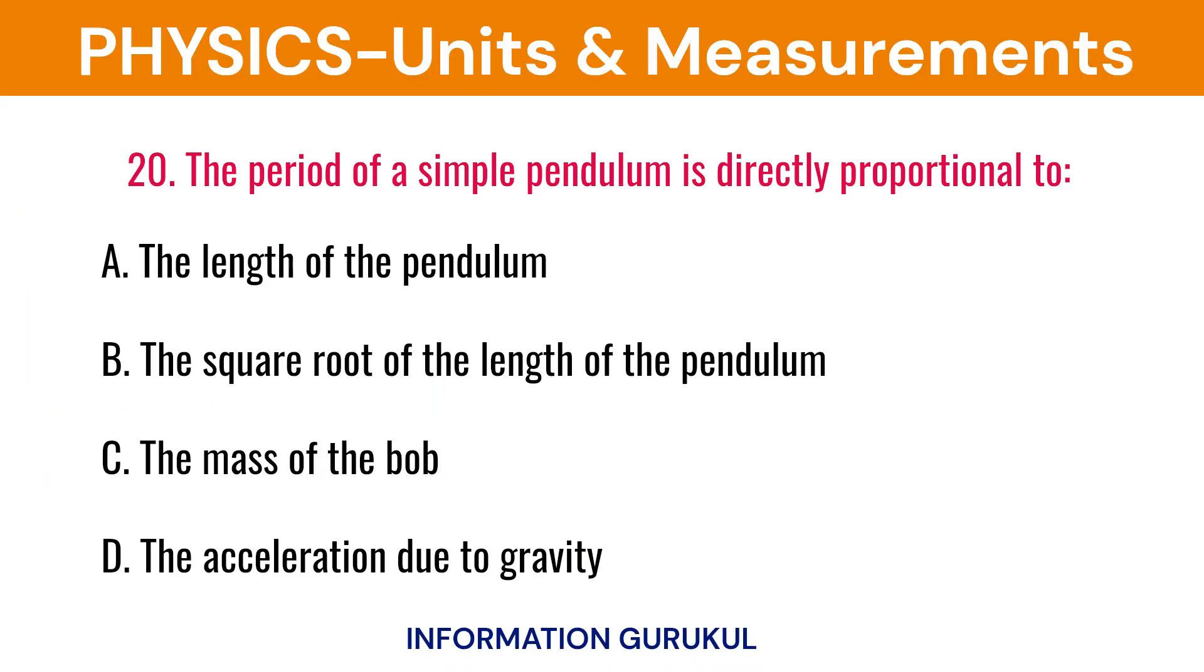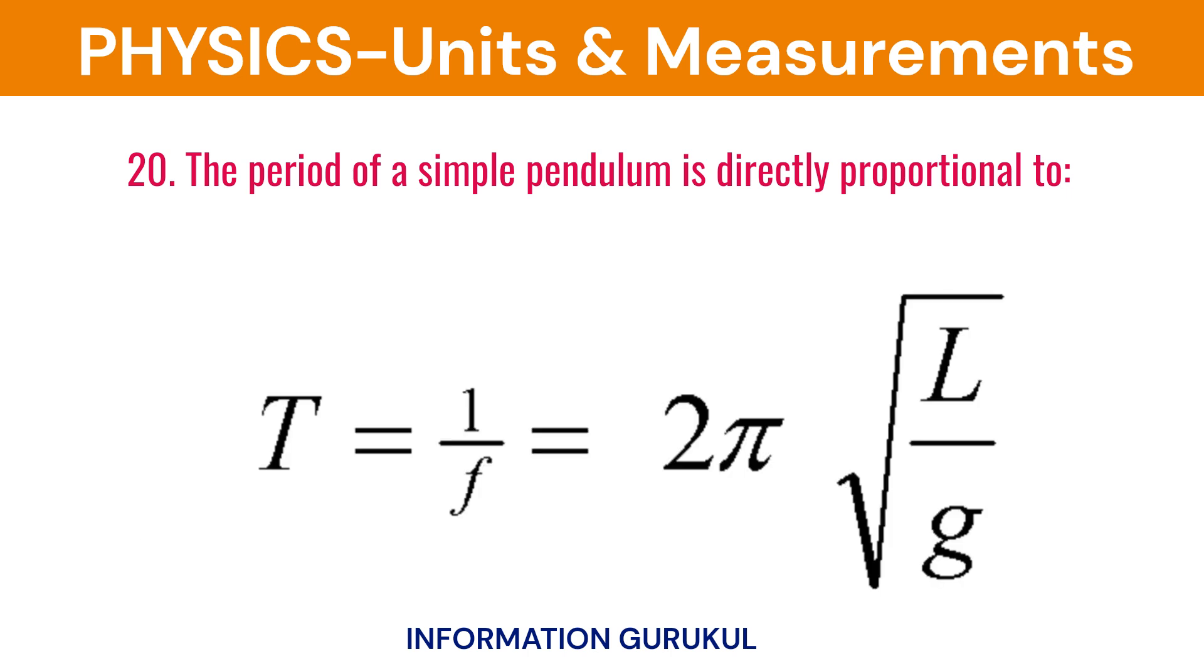The period of a simple pendulum is directly proportional to the square root of the length of the pendulum. The formula shows that the time period depends on the square root of the length of the pendulum.